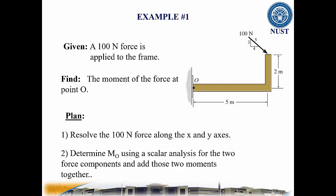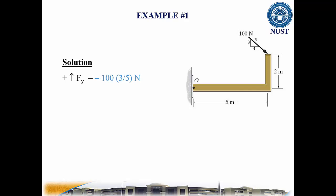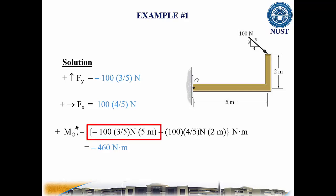So, in the solution, the Y component is minus 100 times 3 by 5 Newtons. The X component is 100 times 4 by 5 Newtons. And the moment about O can simply be added. The first part is the Y component, which is at a distance of 5 meters, and then the X component force, which is at a moment of 2 meters. Notice that it produces counterclockwise rotation. So, the moment must be negative, which is minus 460 Newton meter.